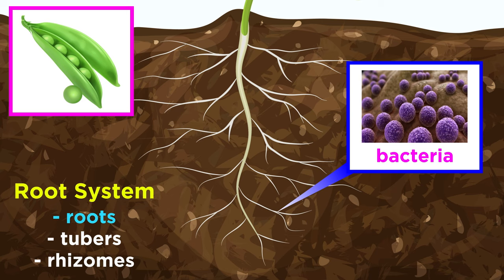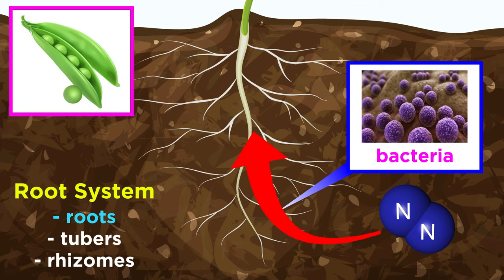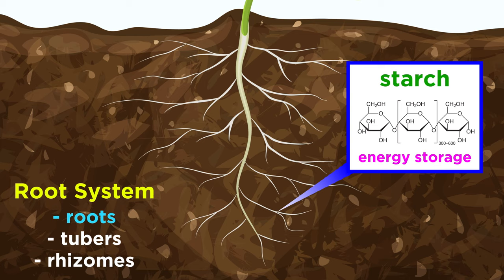Legume plants, like beans and peas, form similar relationships with bacteria living in nodules on their roots. These bacteria specifically help legumes collect nitrogen, which is often a scarce resource in the soil, and its scarcity can limit plant growth.